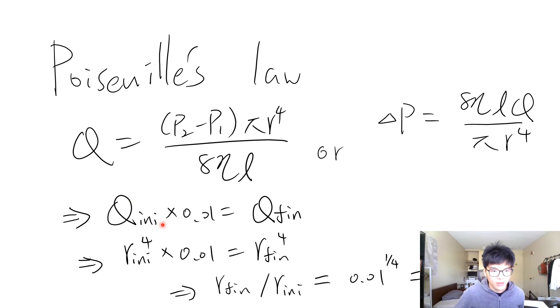So we know the flow is decreased to 1% of the original, so the final flow is 1% of the original flow. And applying this one, you can use this form here, but these two are actually equivalent, so you can decide which one you want to use.